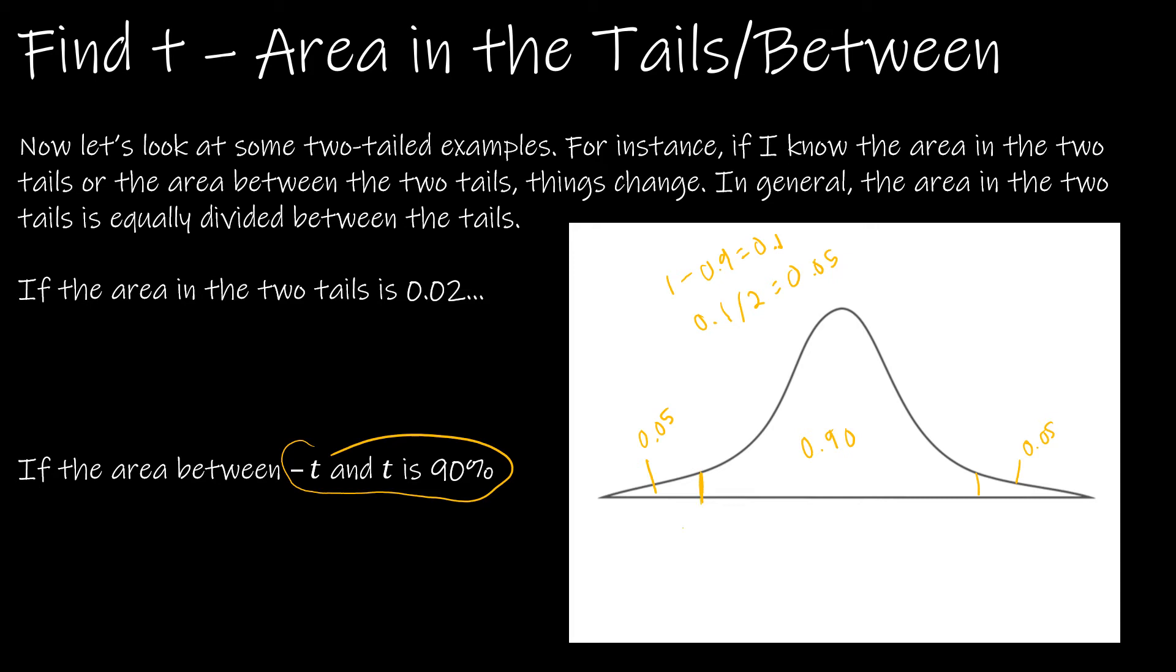But this value is 0.05 to the left, so it would be t dot inverse of that comma the degrees of freedom. Whereas this, the area to the left is 0.05 plus the 0.9, so this would be t dot inverse of 0.95 comma degrees of freedom.